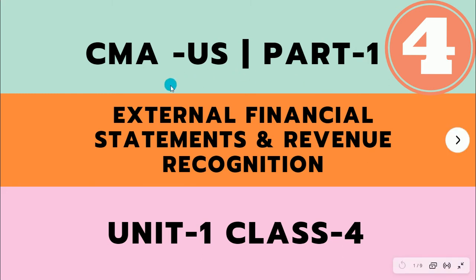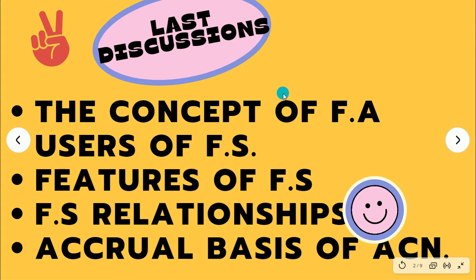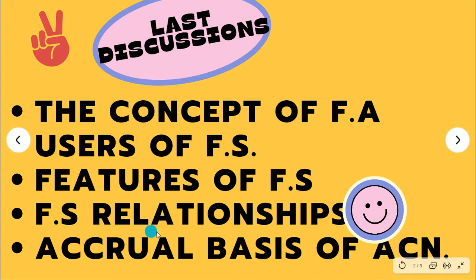Welcome to the next class of CMA US Part 1. We are discussing Unit 1, External Financial Statements and Revenue Recognition. This is the 4th class. We will discuss the concept of financial accounting, uses of financial statements, features of financial statements, financial statement relationships, and accrual basis of accounting.